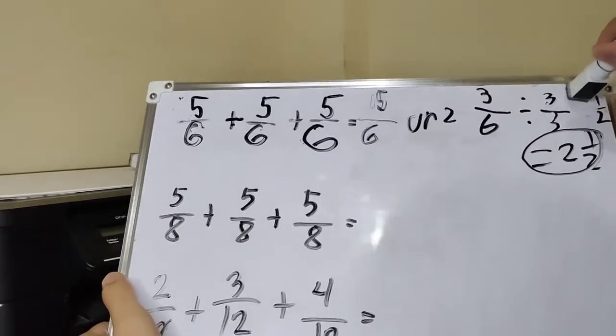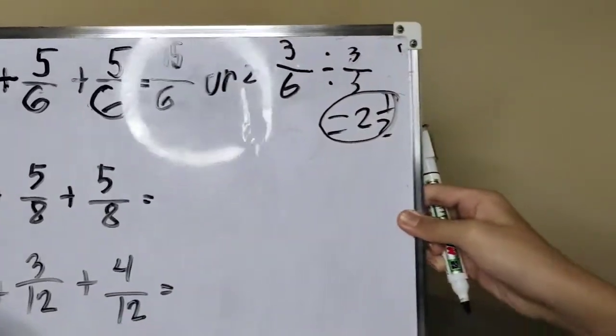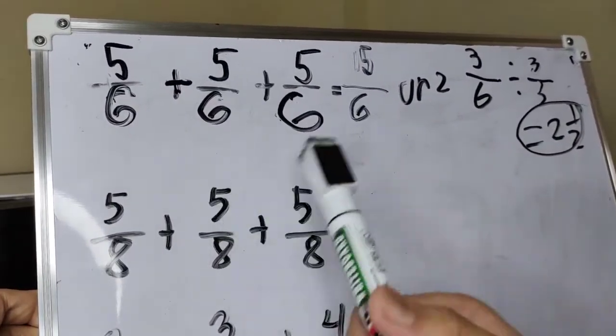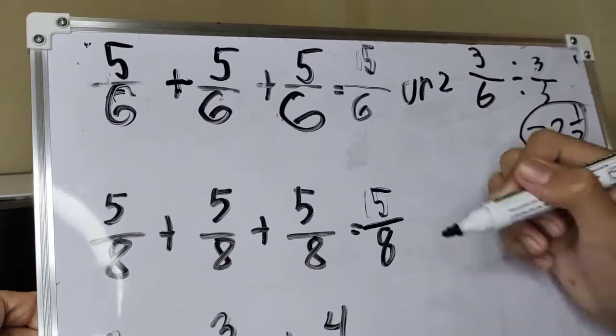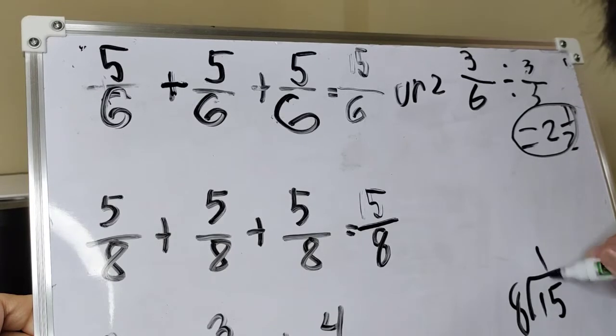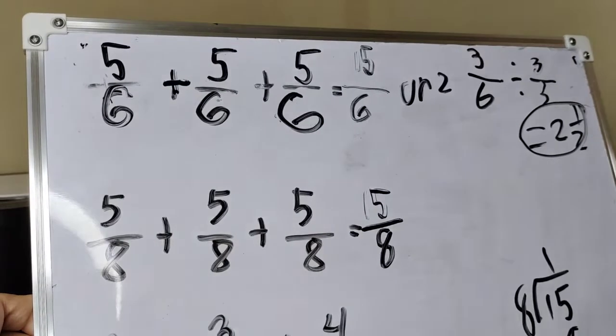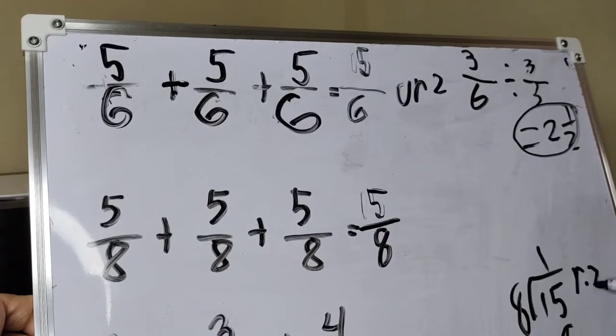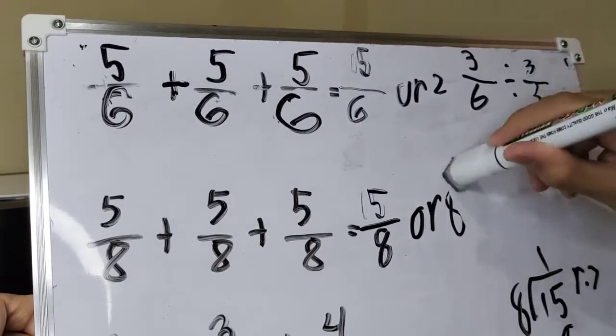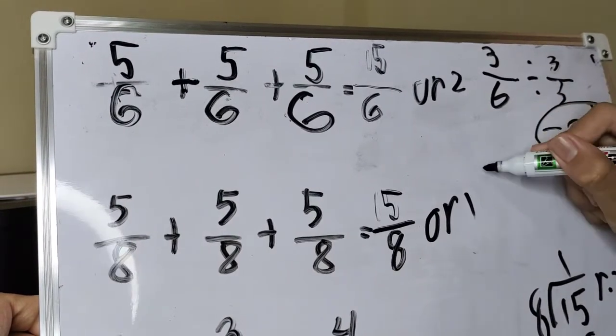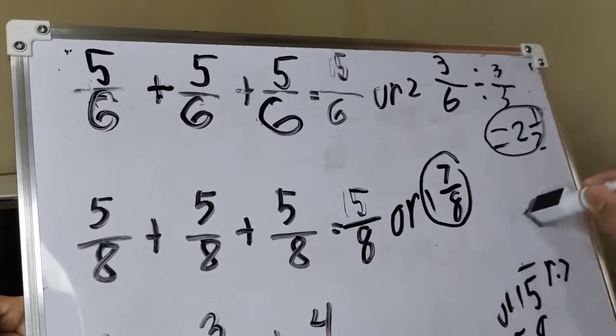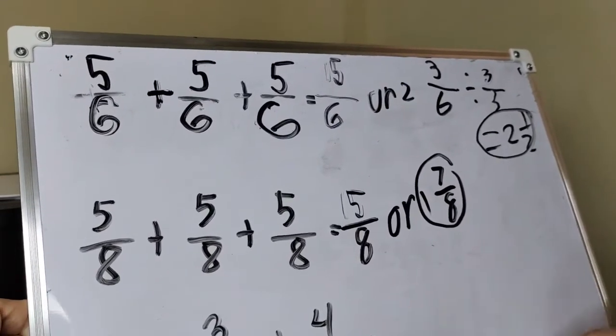Next number, kuya. Wag mo nang buburin. 5/8 plus 5/8. 5 plus 5, 10. Plus 5, 15. Improper fraction na naman. I-divide natin. 7 ba, no? 7. 1, 7/8. Yan. Dahil wala nang GCF, wala nang common factor ang 7 at 8. Yan na ang lowest term ng 15/8.